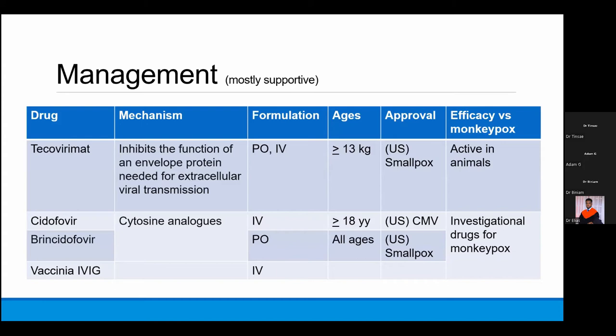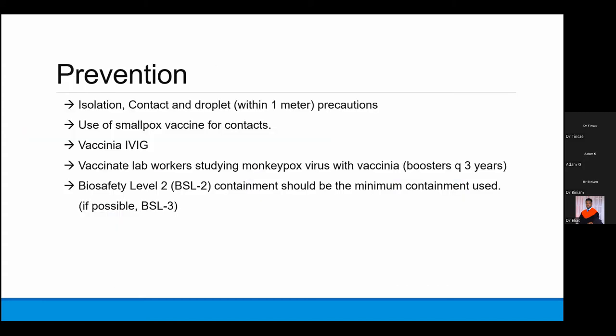We prevent monkeypox by isolating affected people and applying contact and droplet precautions. For contacts, post-exposure prophylaxis includes smallpox vaccines as well as vaccinia IVIG. For laboratory workers employed in referral laboratories with higher exposure risk — such as those at EPHI — smallpox vaccinations with boosters every three years are indicated.